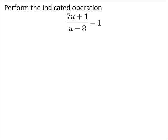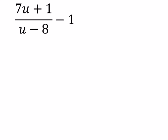Like this one, we got 7u plus 1 all over u minus 8, and that fraction will be minus 1. We're going to take 1 away from it, so 1 by the way can be written as 1 over 1.